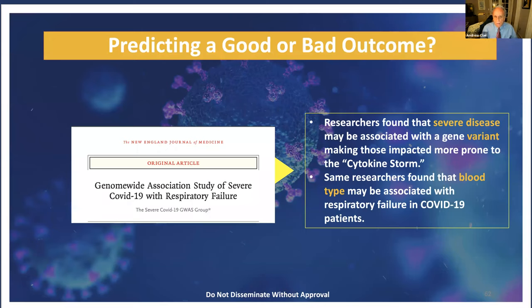We're starting to get a pretty good idea about who's going to have a bad outcome or a good outcome. Blood type may play a factor. If you have type O, research suggests those people are having a better outcome. Type A seems to make you more susceptible to a particularly damaging pneumonia. Type O seems to not be associated with bad outcomes, though more research needs to be done.